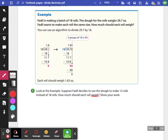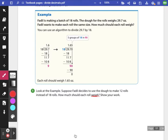So I need to look up and see that Fadil is making 18 rolls and the dough weighs 29.7 ounces to start with, but it says, okay, what if I use it to make 12 rolls instead of 18? So we really don't even need this 18. We need 29.7 ounces to divide it by 12.